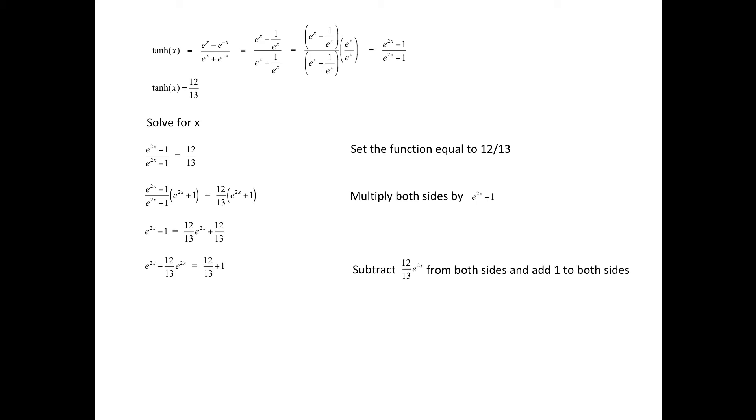Now if we subtract 12 13ths e to the 2x and add 1 to both sides, then the left side would contain all terms that have an x and the right side then would be only the constants.